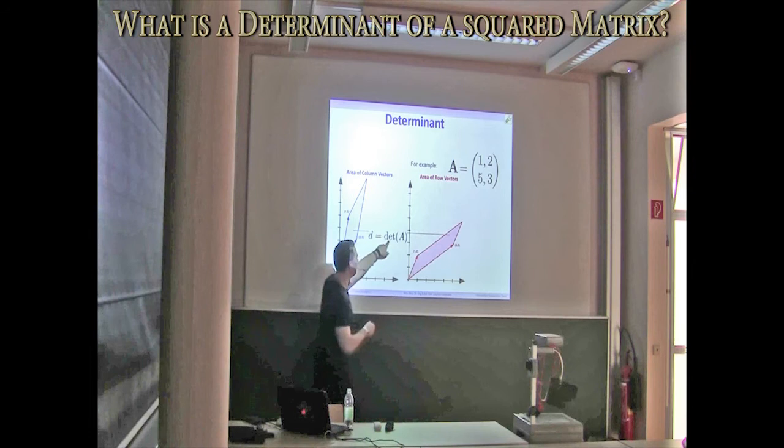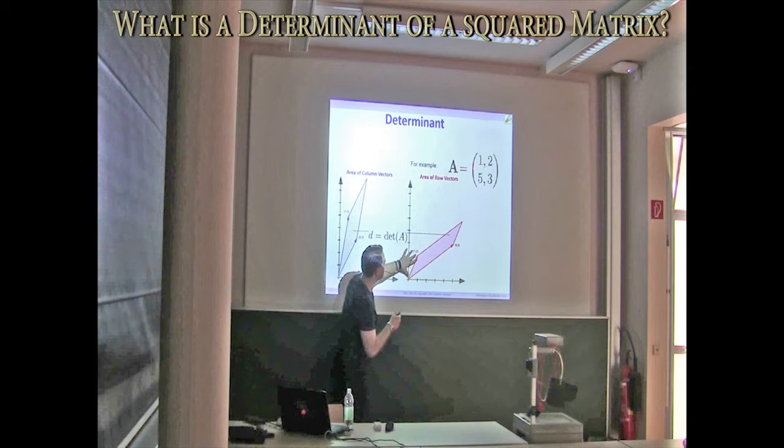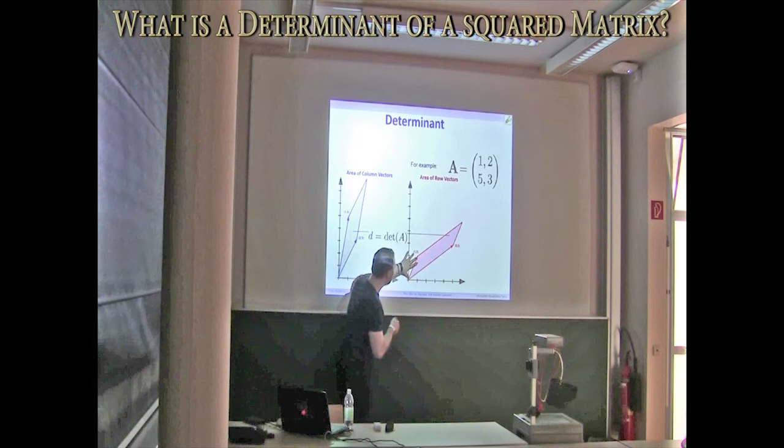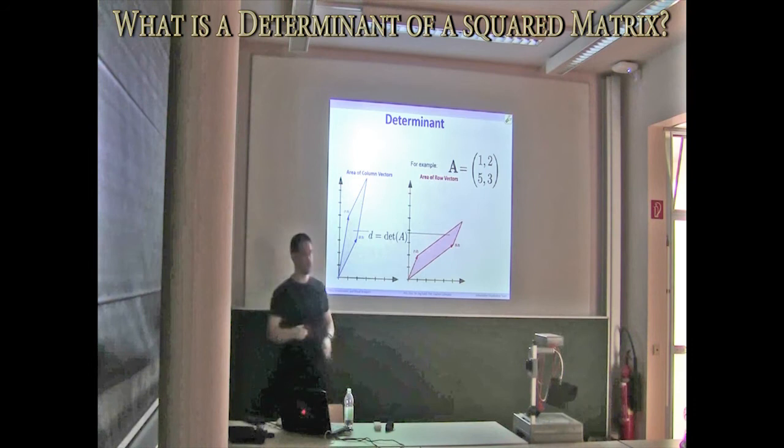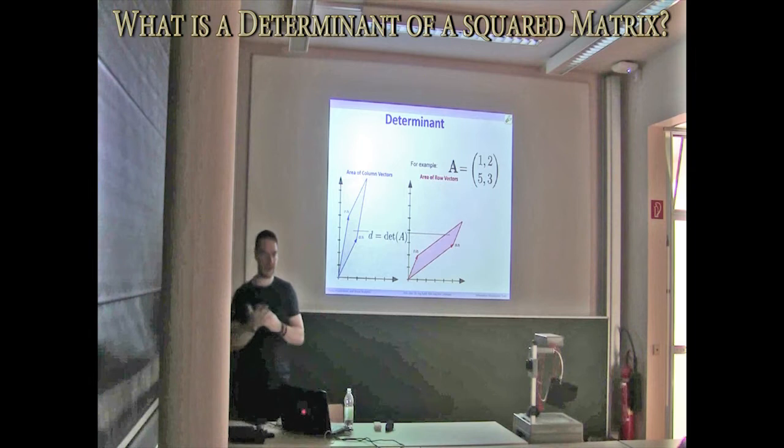Or, you can transpose it, so the determinant of a matrix, if it's transposed, is the same. You can also say, I consider the row vectors, one, two, or five, three. It maybe looks a bit different, but believe me, it is the same area, and therefore, same value of the determinant.